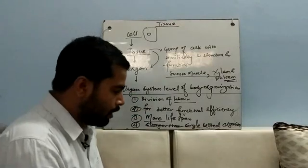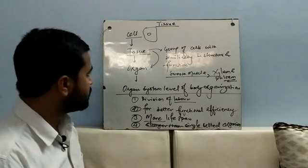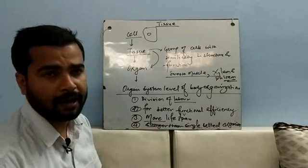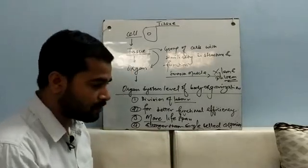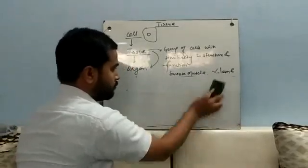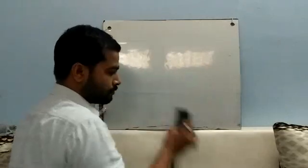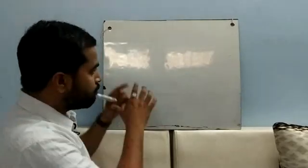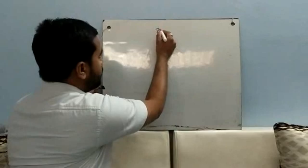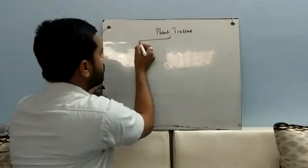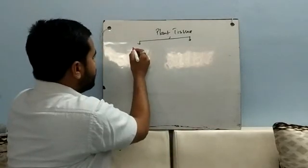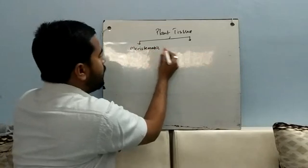Now let us move on to the next part: classifications of tissues. In your syllabus, you will study plant tissue and animal tissue separately. We'll talk first about plant tissue. Plant tissue is of two types: one is meristematic tissue and another is permanent tissue.